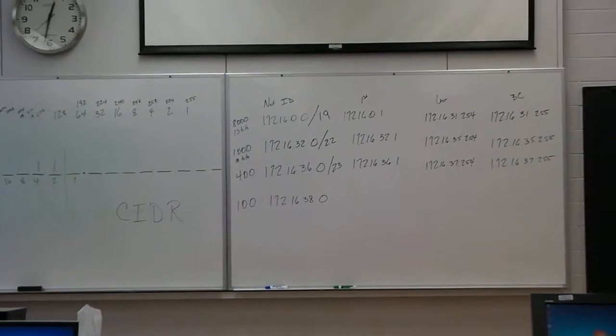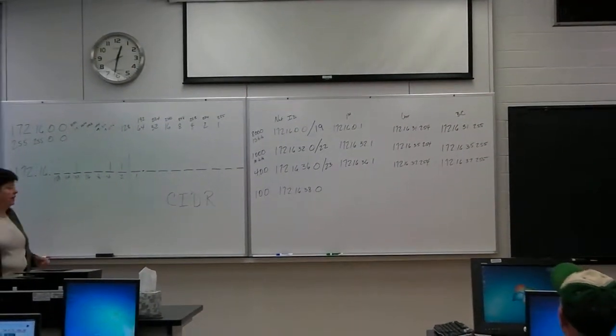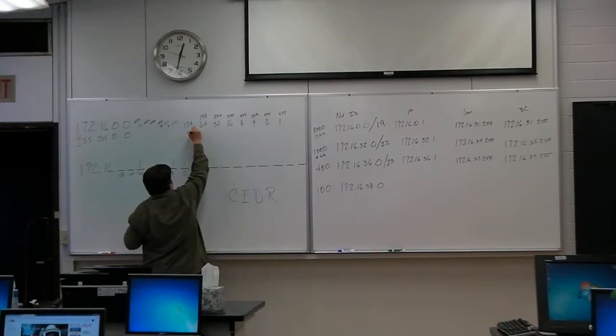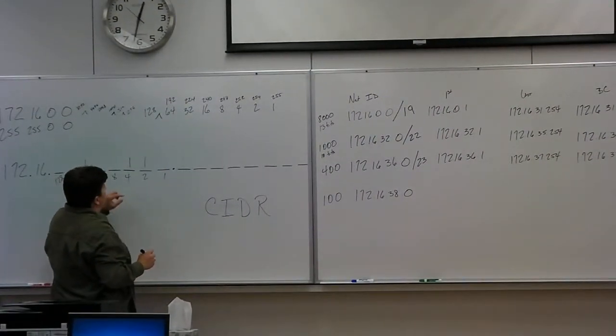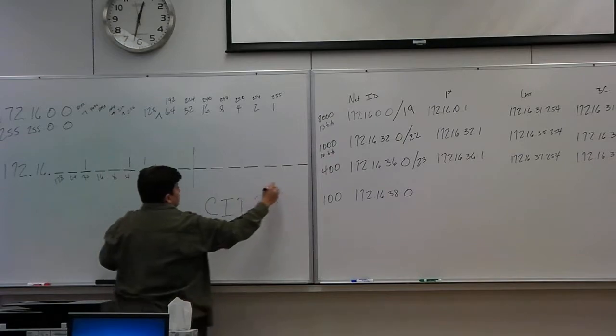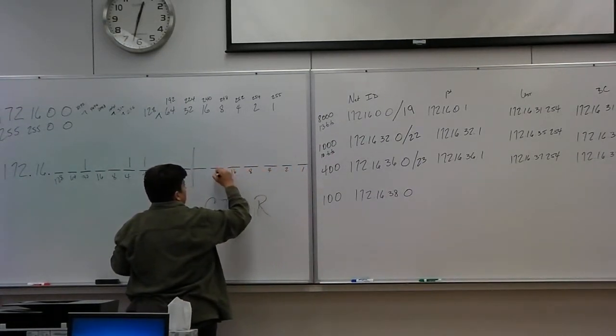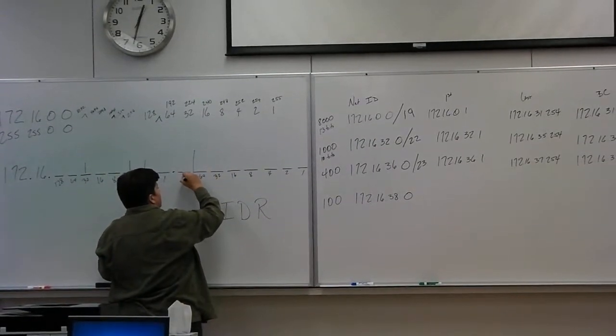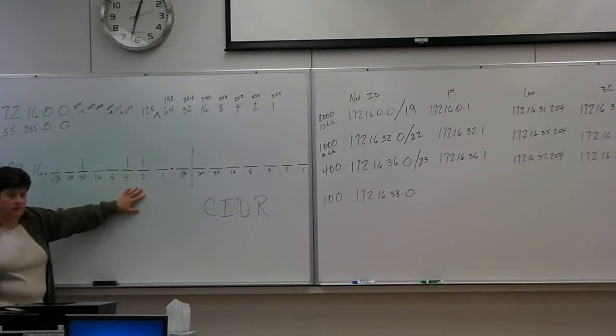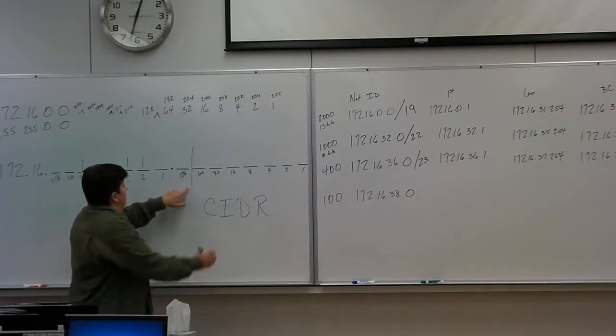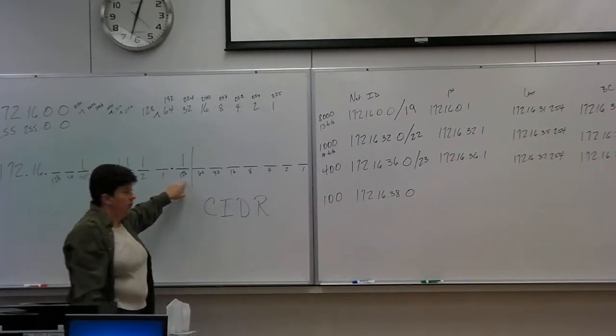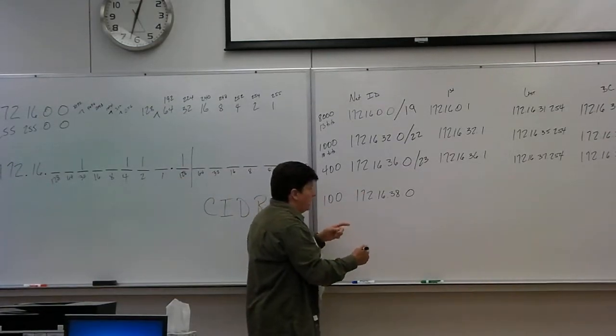And now you've got to do it one more time because you've been asked for 100. So where's the dividing line for 100 hosts? 128, right? Here. So now we're here. Leave everything else turned on like it has been. Throw my line. Turn the bit on just to the left of it. So the next network ID would be.